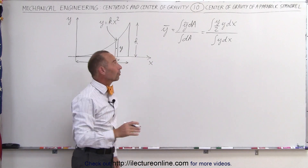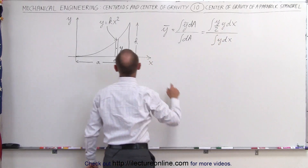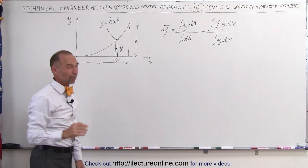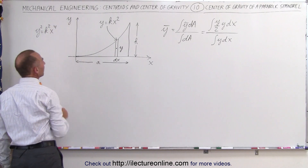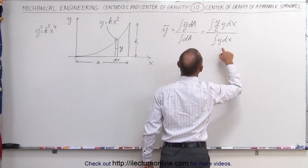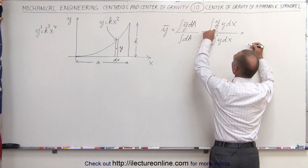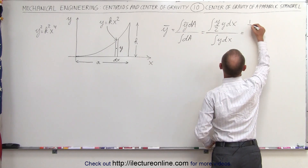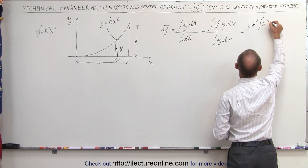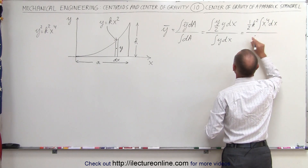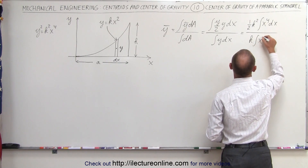At this point we still can't integrate because we have the variable y and a differential dx, so we have to change the y to a dx. Coming back over here, we realize that y equals kx², so if we square both sides we get y² equals k² times x to the fourth power. We can put that in the numerator, and for y we simply replace it by k times x squared. This becomes equal to — we can factor out a one-half and a k-squared — so we have one-half k² times the integral of x to the fourth times dx, divided by k times the integral of x squared times dx.